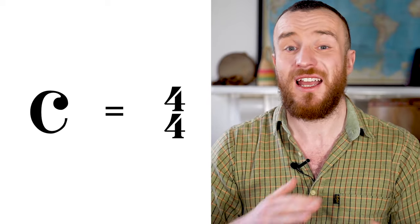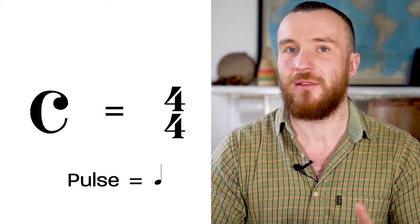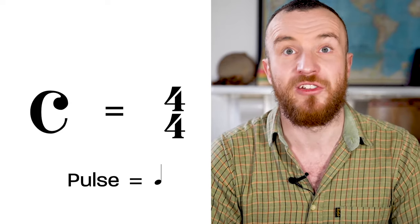Common time tells us that there are four pulses per bar and they're on the crotchet or on the quarter note. So the music is a steadier tempo, not slow, but just steadier than the cut common time.